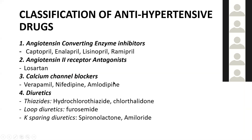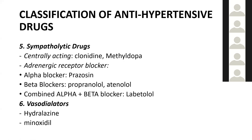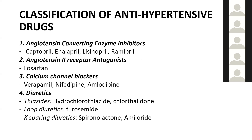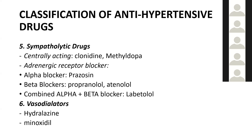The third category is calcium channel blockers such as verapamil, nifedipine, and amlodipine. Fourth are diuretics, divided into thiazide diuretics (hydrochlorothiazide), loop diuretics (furosemide), and potassium-sparing diuretics (spironolactone). Fifth are sympatholytic drugs — centrally acting agents and adrenergic receptor blockers including alpha blockers and beta blockers such as clonidine, prazosin, and propranolol. Sixth are vasodilators such as hydralazine and minoxidil.